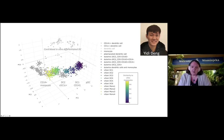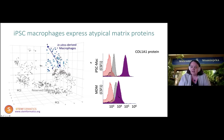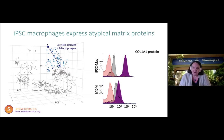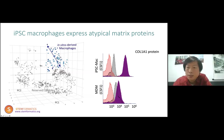The IPS-derived macrophages also show an abnormal phenotype. When we look at all IPS-derived macrophages in the atlas, we can see that they have retained ectopic expression of some matrix proteins. This is very atypical for a primary human macrophage, although there are some circumstances where matrix formation might be expected. We were able to validate that indeed these cells express this not only at an RNA level but also at a protein level.